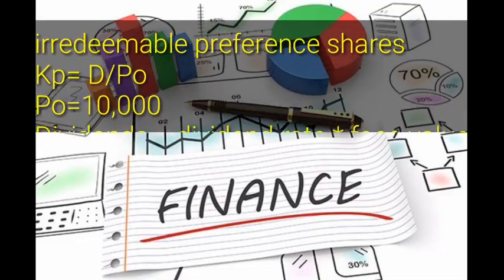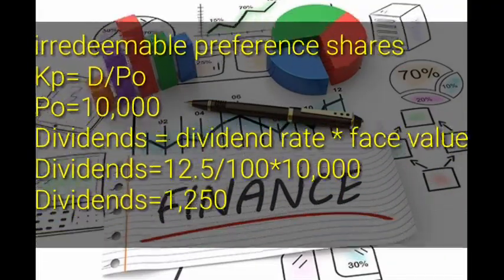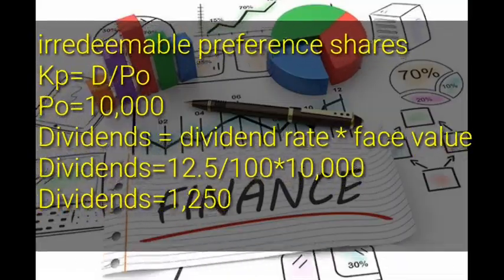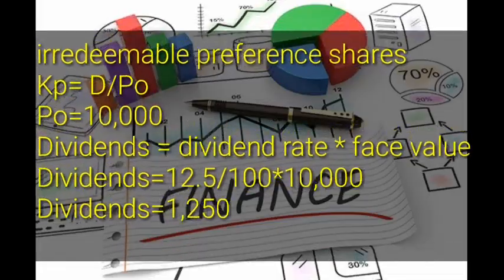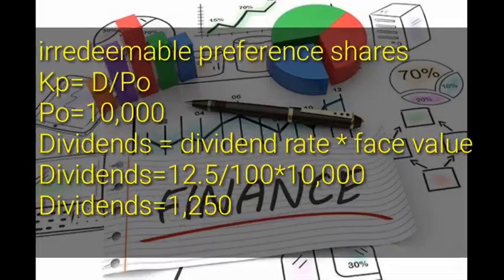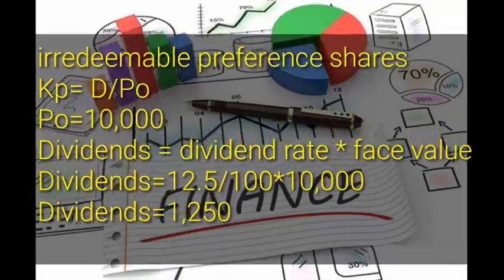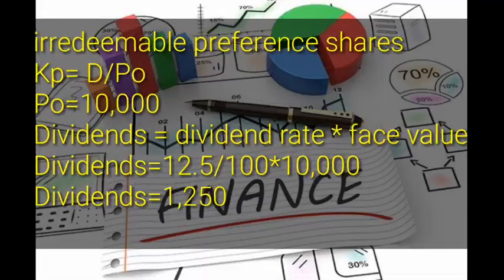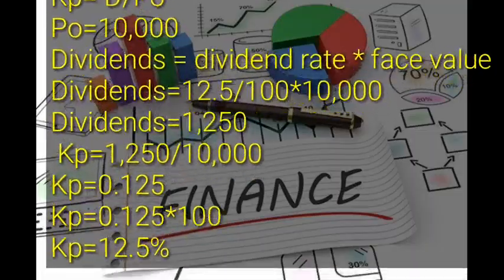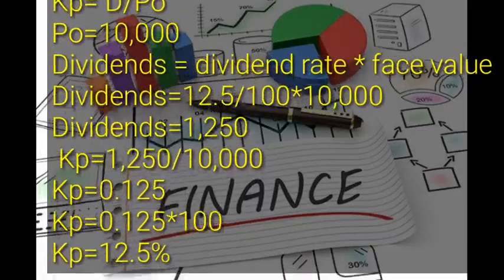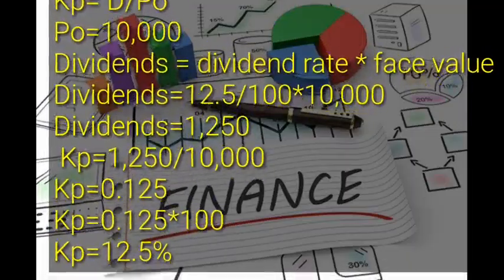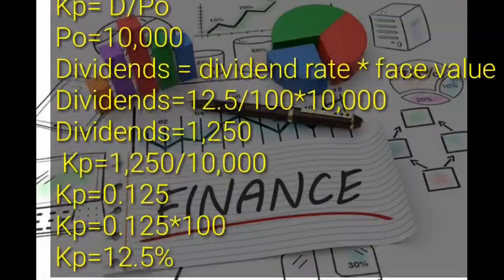The formula for the specific cost of irredeemable preference shares is dividends divided by market value (D over P₀). Since shares were issued at par, market value equals face value — P₀ is 10,000. Dividends are calculated as 12.5 percent times 10,000, giving 1,250. Substituting: 1,250 divided by 10,000 gives 0.125. Multiplied by 100, the specific cost of irredeemable preference shares is 12.5 percent.